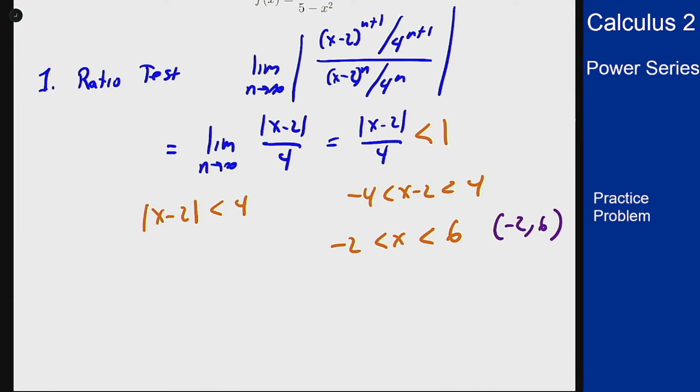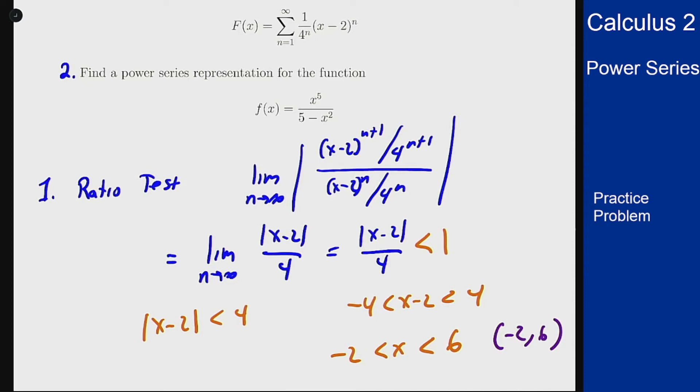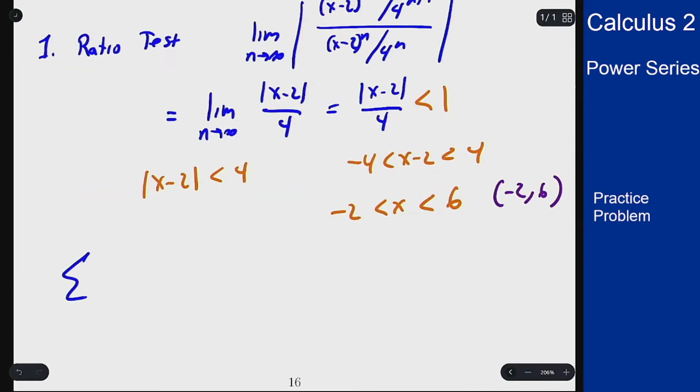Now we also have to check the endpoints. What happens at the endpoints? If I plug in x = -2, I have the sum from n=1 to infinity of (1/4^n)(-2-2)^n.